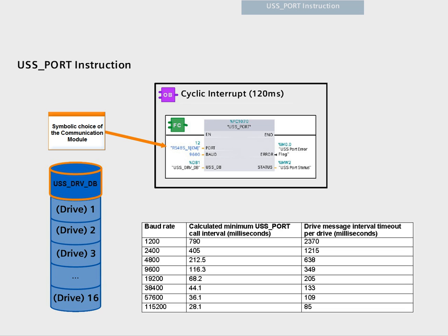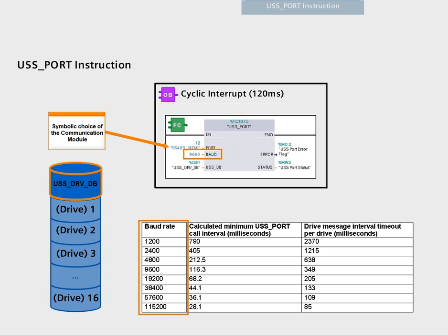Since every data exchange to a drive requires a certain amount of time, there is a smallest possible call interval for each possible baud rate. The table shows that for a baud rate of 9600 baud, the cyclic interrupt would need a value of 120 milliseconds to guarantee smooth communication to the next drive. Please note that a higher baud rate may mean higher sensitivity to electromagnetic interferences. The port function must use the same instance DB as all other USS functions assigned to a certain communication module.